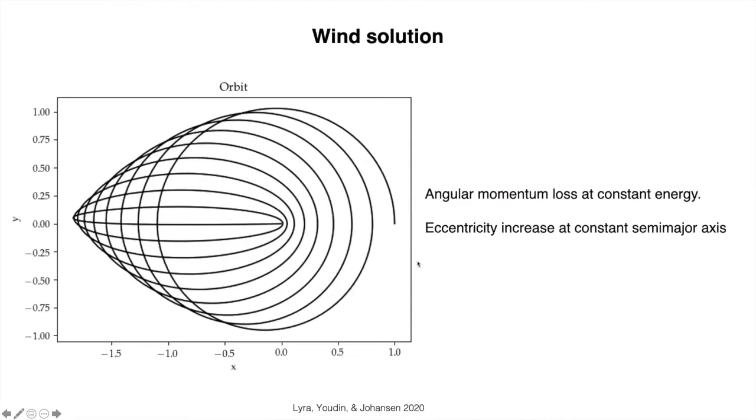What we're looking at is a loss of angular momentum at nearly constant energy. So, geometrically, this is what would be happening. You have the body here initially in a circular orbit. Because the orbit is losing angular momentum, it's becoming flatter and flatter,